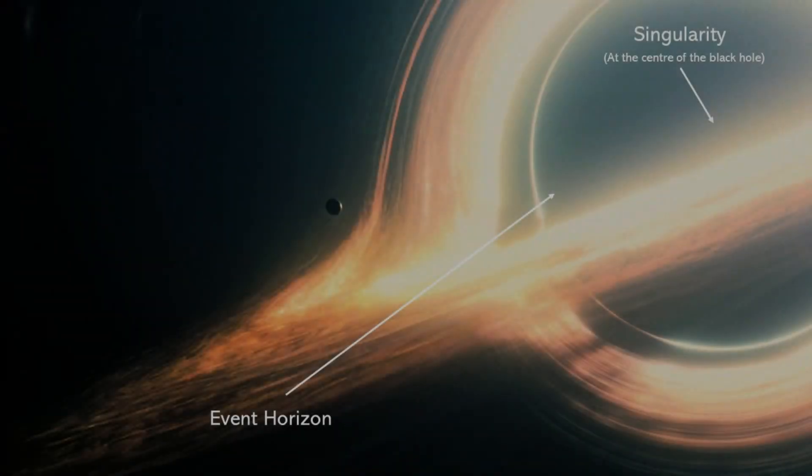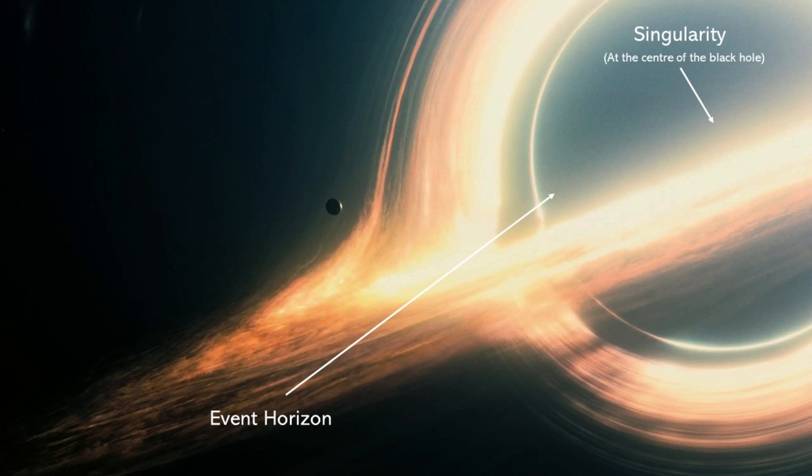The event horizon of a black hole is a critical boundary or surface surrounding the black hole beyond which nothing, not even light, can escape its gravitational pull. It is a defining feature of black holes and plays a fundamental role in their properties and behavior. The event horizon is often referred to as the point of no return.